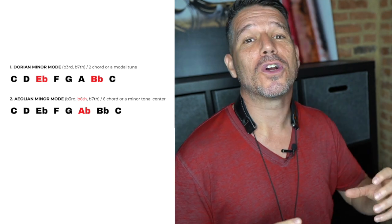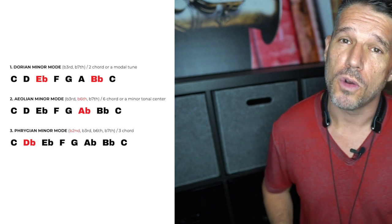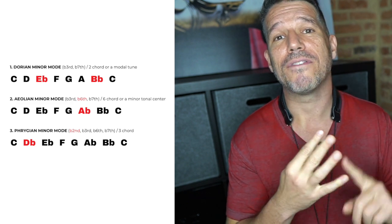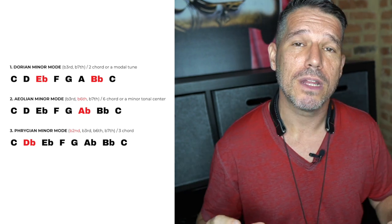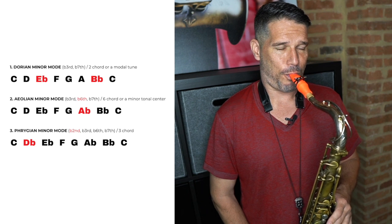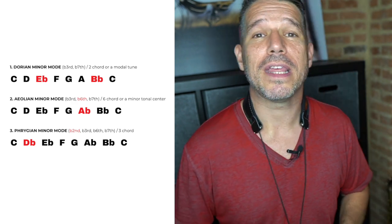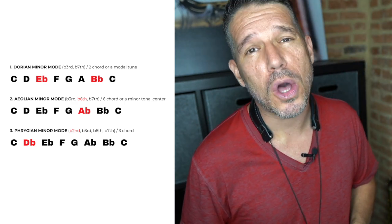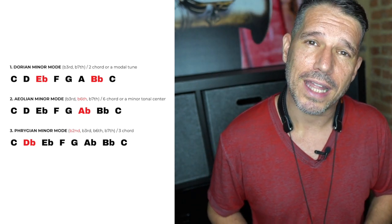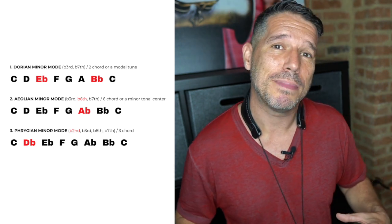Now we change one note again to turn the Aeolian mode into the Phrygian mode. The Phrygian mode comes from the third degree of the major scale and has a flat second, flat third, flat sixth, and flat seventh — the only difference from Aeolian is the added flat second. For C Phrygian, you have D flat, E flat, A flat, and B flat. As you can hear, the Phrygian mode has a darker sound because of that lowered second.